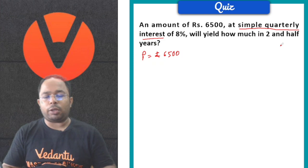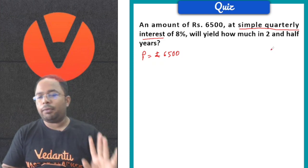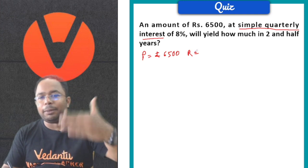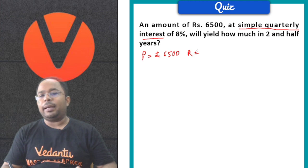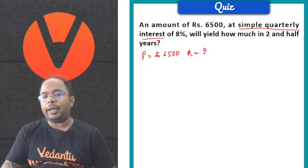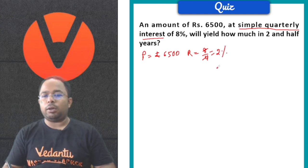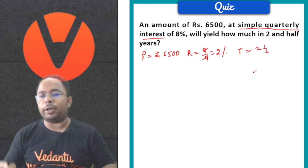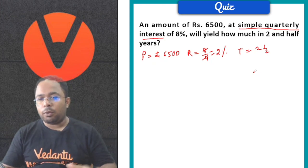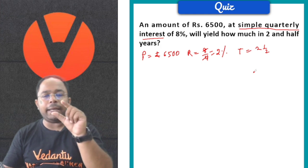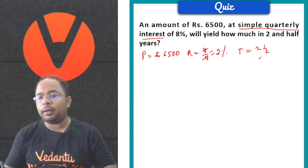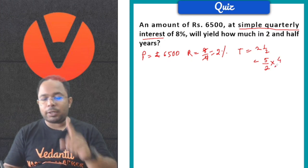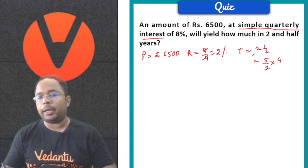So 4 quarters make 12 months. The rate of interest is per annum, for the full year. When calculations are done for 3 months (one quarter), the rate of interest will be 8 ÷ 4 = 2%. Similarly, the time is 2 and half years. But calculations happen every 3 months, so in one year there are 4 calculations. For 2.5 years: (5/2) × 4 = 10 times calculations will be done.